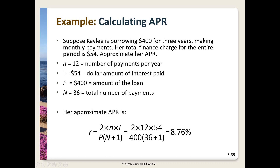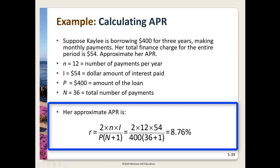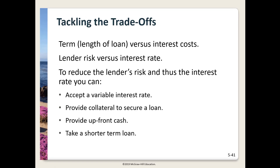Here's an approximate APR example. The loan amount is $400, the term is three years, payments are monthly, and the total finance charge is $54. In the approximation formula: lowercase n equals the payments per year (12), capital I equals the dollar cost of credit ($54), capital P equals the net loan amount ($400), and capital N equals the total number of payments (3 × 12 = 36). Your approximate APR is 8.76%. This is just a back-of-the-envelope approximation; with time-value-of-money computations we can arrive at a more detailed result.